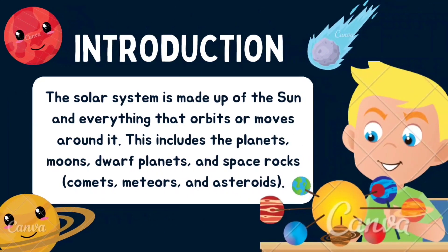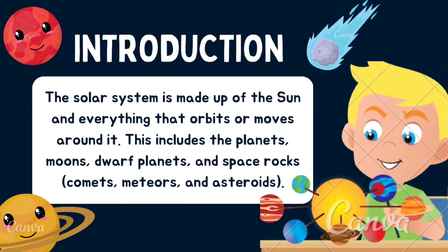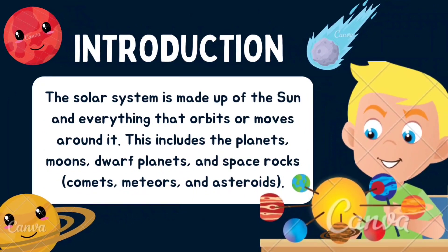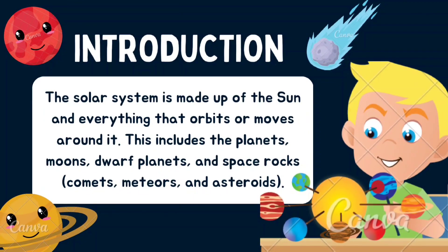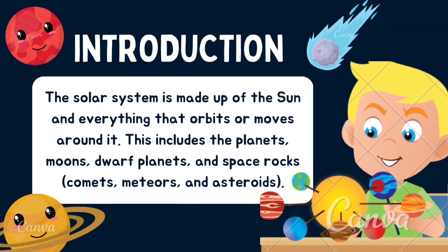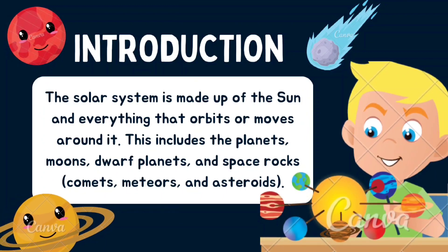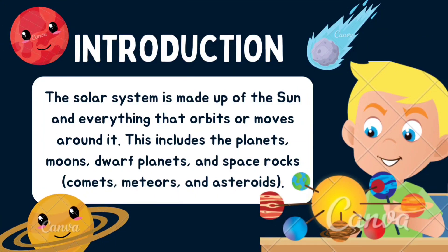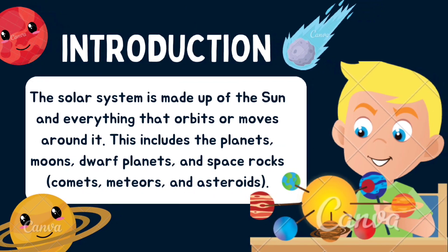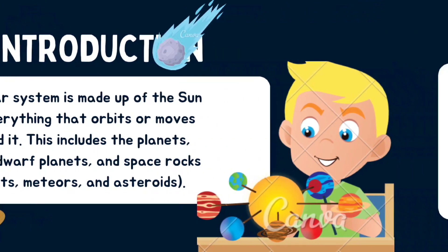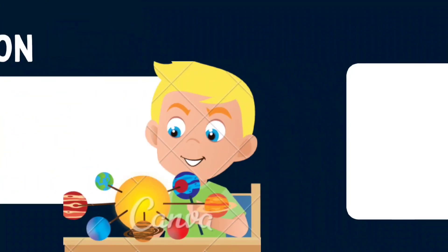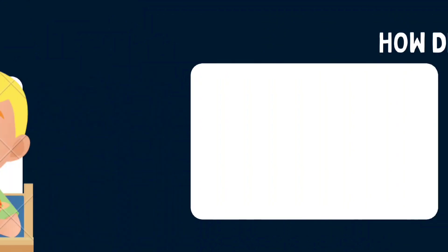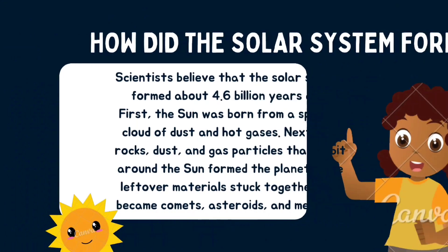First, let's talk about the introduction. The solar system is made up of the sun and everything that orbits or moves around it. This includes the planets, moons, dwarf planets, and space rocks such as asteroids.